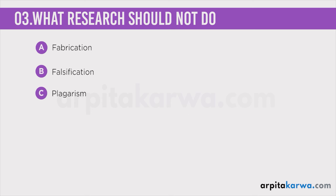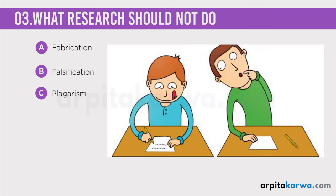Finally, we have plagiarism. Plagiarism is when you use someone else's work and cite it as your own — you say that it is your work. At times people read a book or another research paper, like a particular idea, paraphrase it, write it in their own research, and claim that it is their own work.